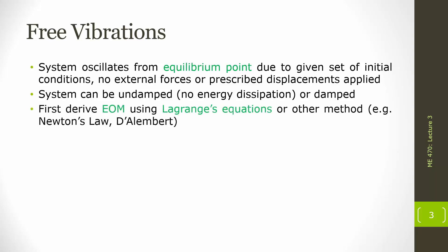In order to solve for the behavior of the system and all its states, we're going to need to start with the equation of motion. This was really the focus of the previous section when we were working on modeling our dynamic systems — the end result of that modeling step was the equation of motion. In this course we're primarily going to be using Lagrange's equations to derive our equation of motion, but there are other methods like Newton's laws, D'Alembert's principle, energy methods, and force methods.